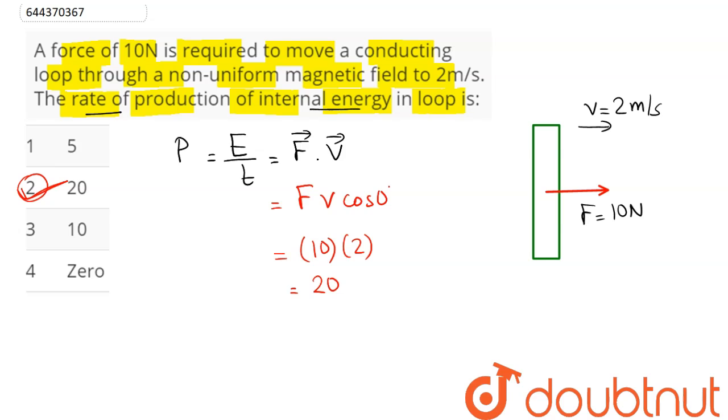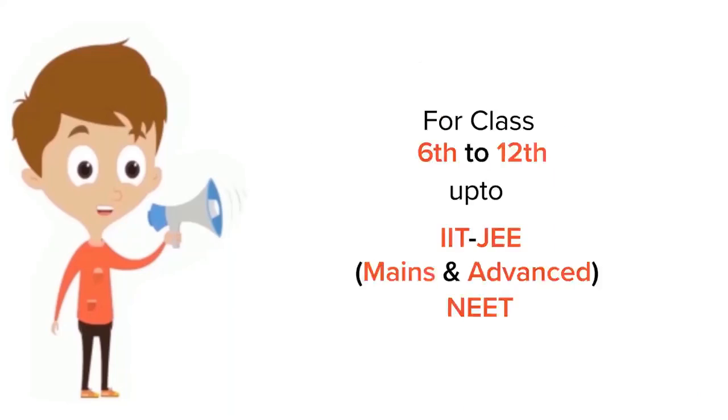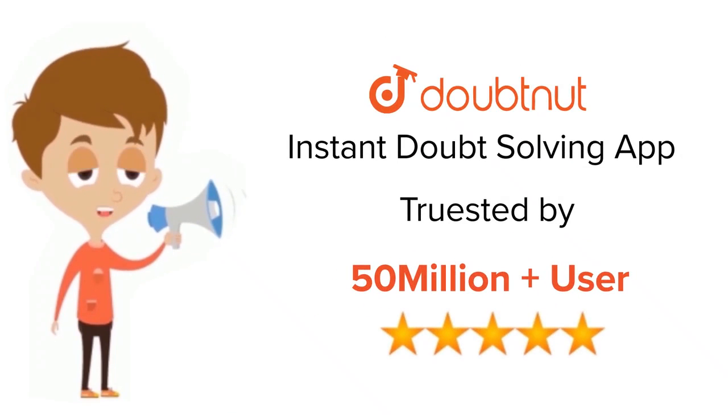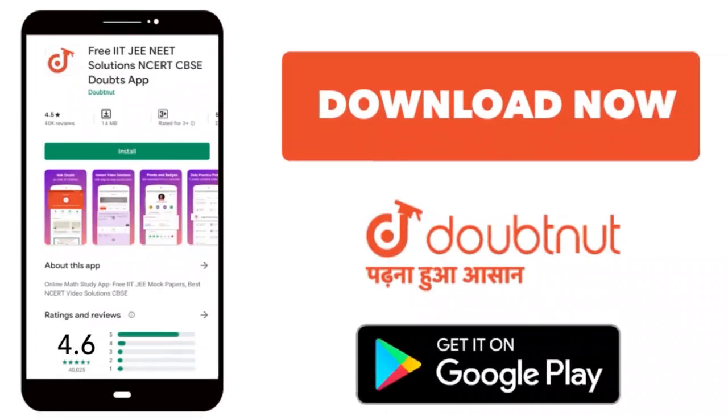So option number 2 we can say is the correct answer. Hence 2 is our answer. For class 6 to 12, IIT-JEE and NEET level, trusted by more than 5 crore students. Download Doubtnet app today.